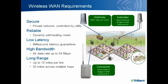This webinar is focused specifically on the Wireless WAN, so we're going to focus on its requirements. The very first thing we need to address is security. We're talking about a completely private network that is owned and controlled by the utility from end to end, with all of the encryption and authentication to ensure confidentiality, message integrity, and privacy. The network also needs to be reliable, featuring a self-healing mesh network that provides redundancy and fault tolerance. It also needs to provide low latency for grid reliability applications, the bandwidth to support applications like video monitoring, and long-range communications for links between substations that may be miles apart.